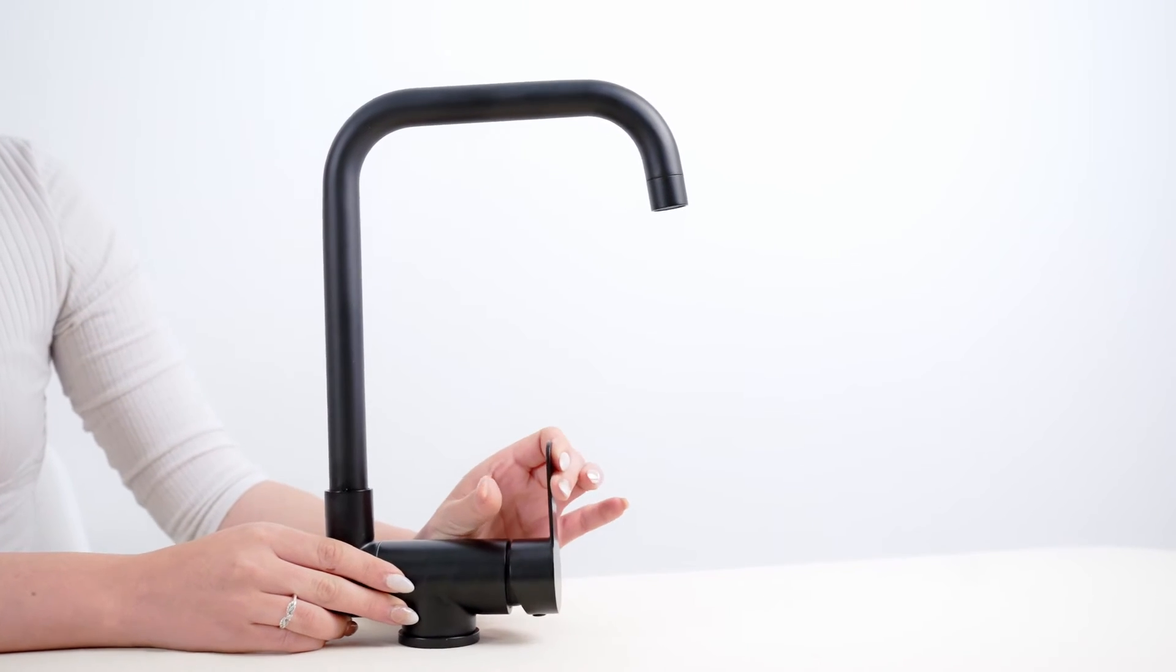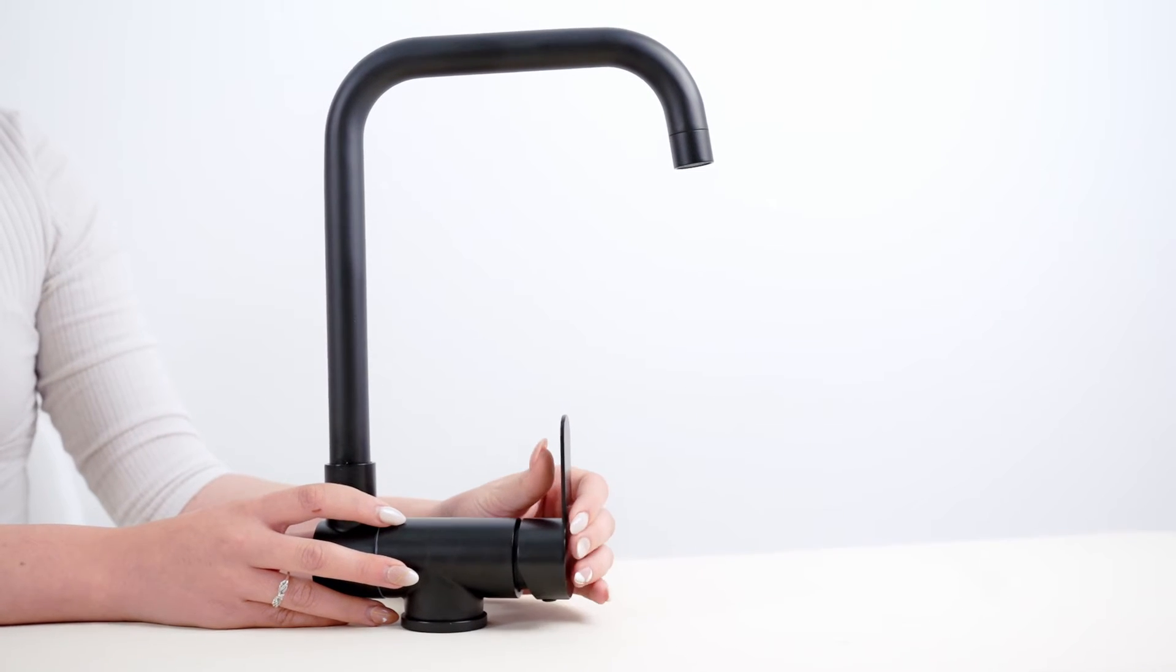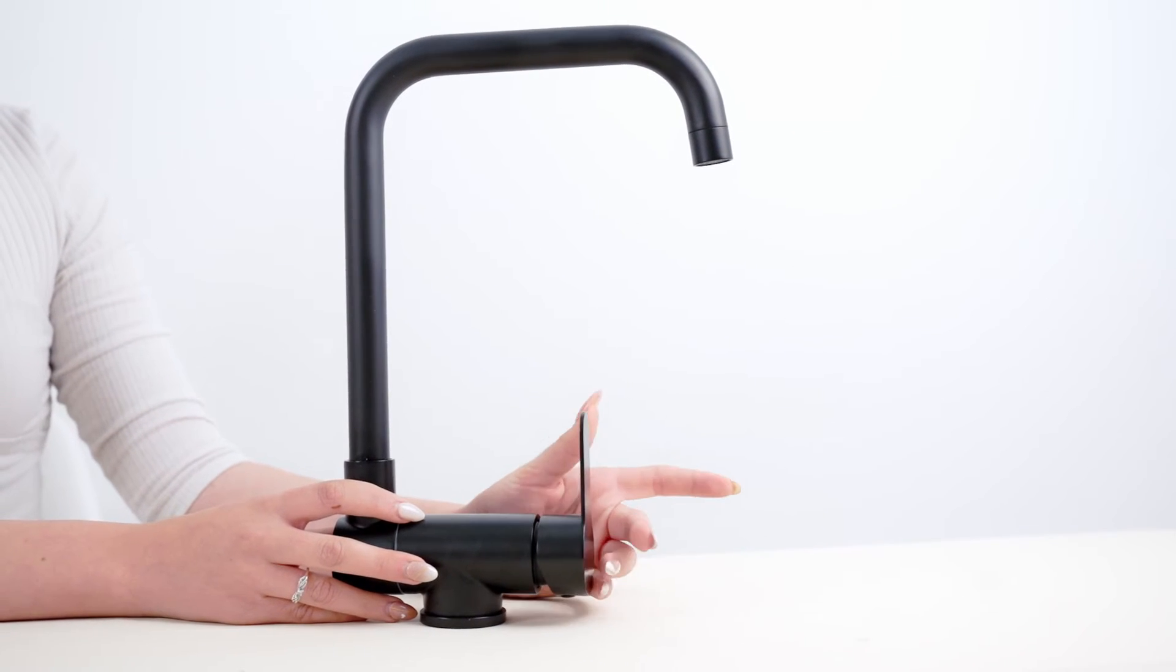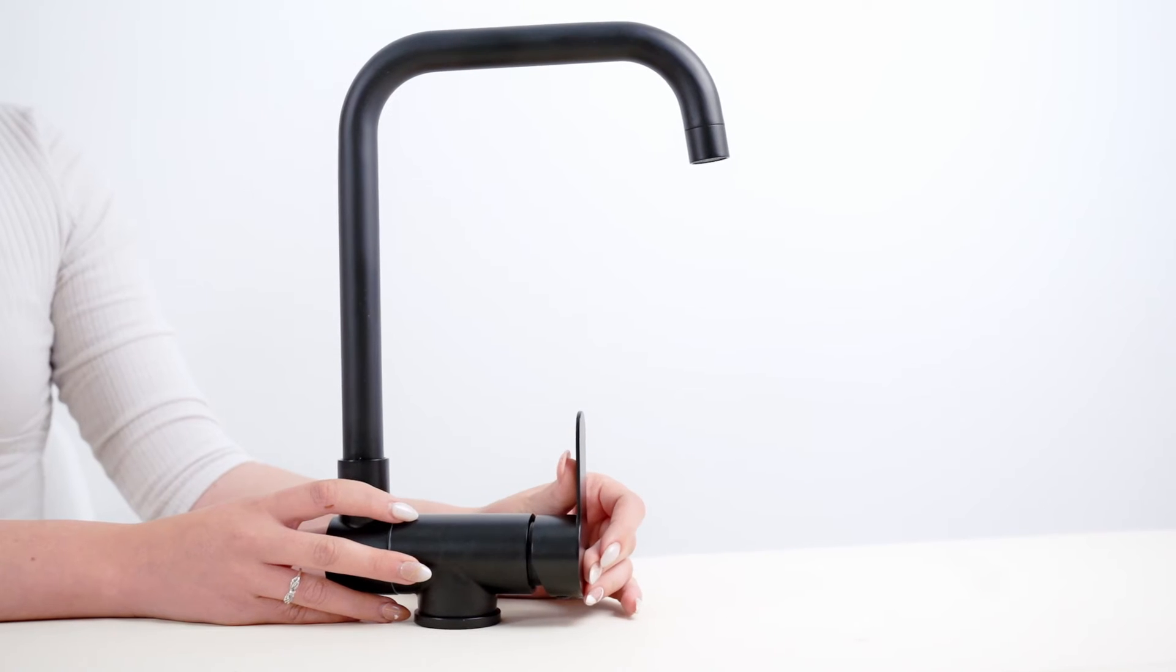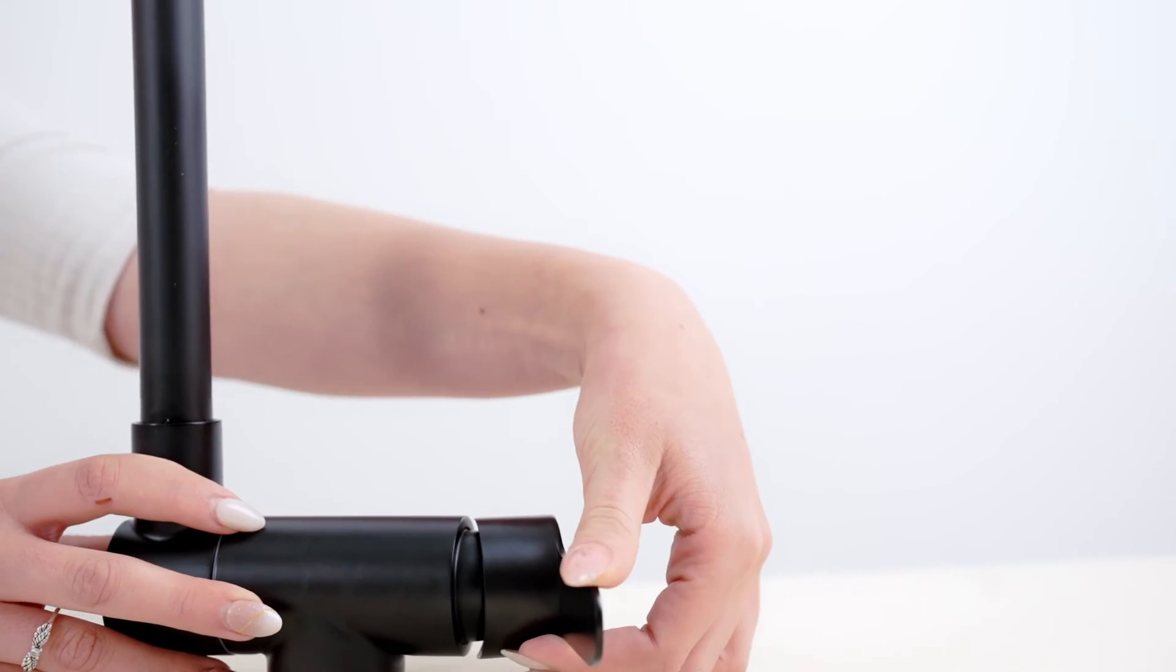So on the left side you have the adjustable lever for hot and cold water. So you just push it to the left and then it can go 90 degrees to the front.